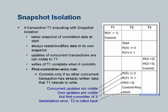Now let us see what happens when T2 reads Z. T2 got a snapshot when it started. So even though Z has been set to 3, T2 will get back the original value which was 0. What is happening is it is not seeing concurrent updates — when it reads it is reading from its own snapshot. Next it reads Y and gets the value 1. Actually if T2 had written Y to 2, it would have got 2 here. So it can see its own updates.